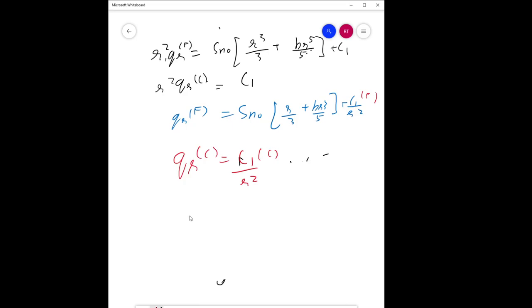What we know is at R = 0, Q_R_F cannot be infinite, so C_1 must equal 0. We also know that at R = R_F, Q_R_F must equal Q_R_C. Substituting this, you'll find the value for C_1.